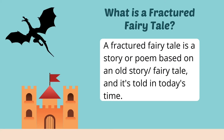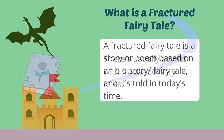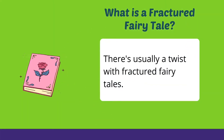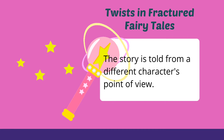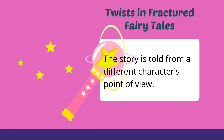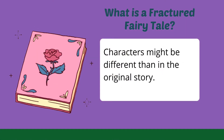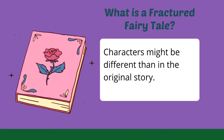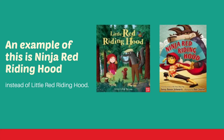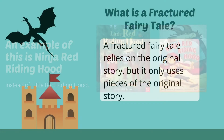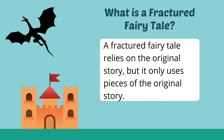What is a fractured fairy tale? A fractured fairy tale is a story or poem based on an old story or fairy tale, told in today's time. There's usually a twist — that twist might be the story told from a different character's point of view. For example, maybe instead of Cinderella's point of view we get the fairy godmother's point of view. Fractured fairy tales are also when characters might be different somehow — an example is the book Ninja Red Riding Hood instead of Little Red Riding Hood. A fractured fairy tale relies on the original story but only uses pieces of it.